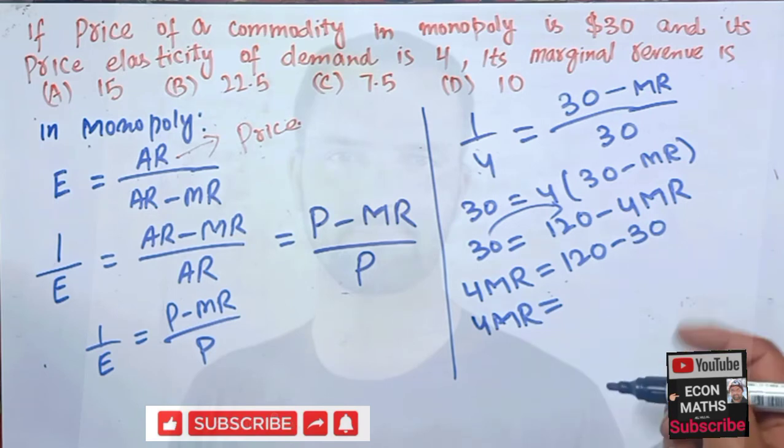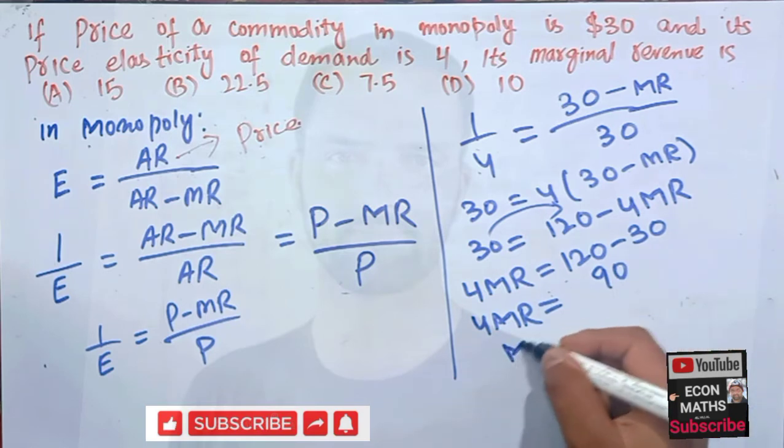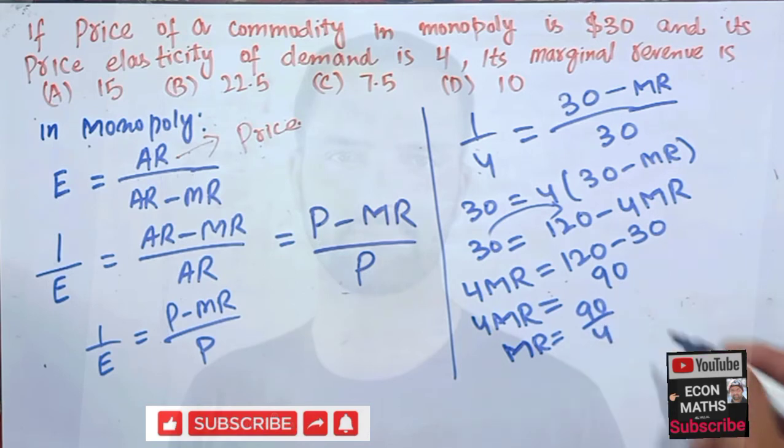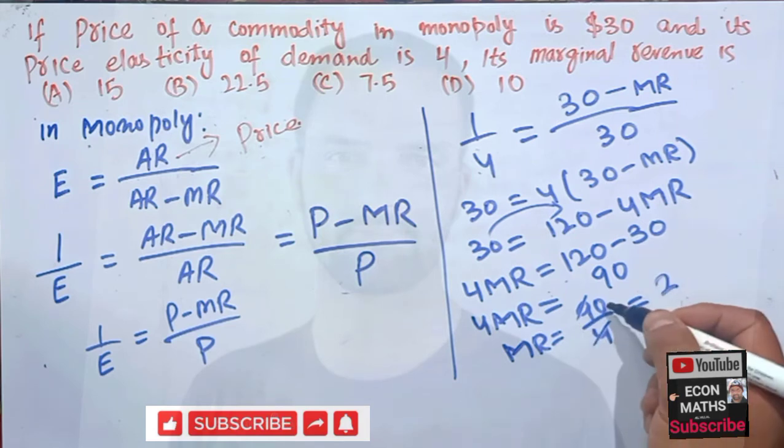That equals 90. Our marginal revenue would be equal to 90 divided by 4.